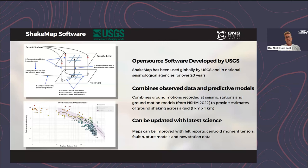We can improve our shaking layers and ShakeMaps with new information such as felt report information, centroid moment tensors — which tell us the center of the earthquake and magnitude more accurately — and fault rupture models which tell us the extent of the rupture, as well as new station data. Our science is evolving, and through the RSET Endeavour program we're aiming to produce these updated science models much faster than in the past, moving from updates within 10 to 24 hours or days into minutes in near real time.